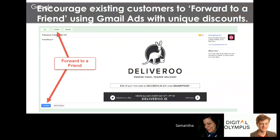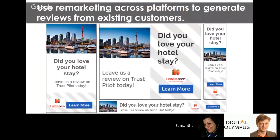First: use Gmail ads. Upload your list of existing customers and promote a 'forward to a friend' scheme. For example, Deliveroo has an offer saying 'forward this on and get 10% off your first order.' If you're an existing customer who's had a great experience, you'd be more inclined to share that with friends and encourage them to take up that discount.